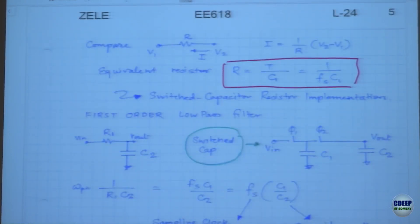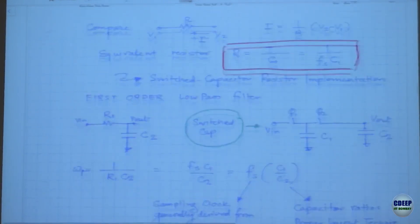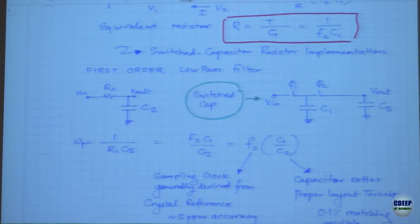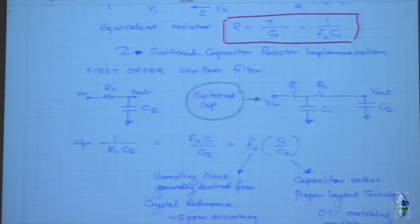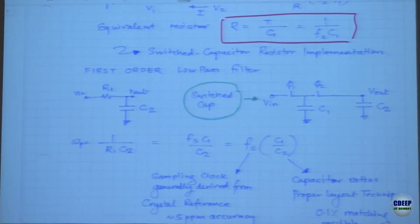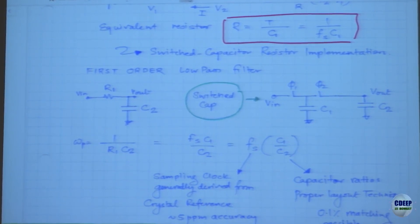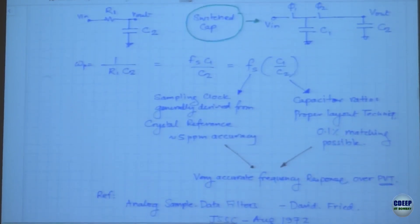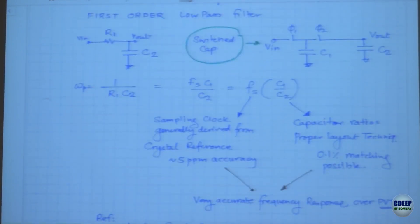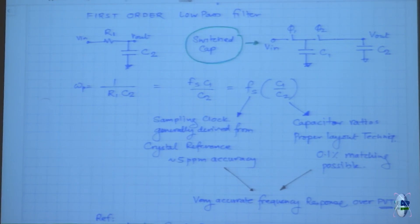You can create a simple first-order RC filter using switch caps. The corner frequency, which is 1 over R1·C2, is given by sampling frequency multiplied by the ratio C1/C2. The key point is Fs comes from an extremely accurate clock reference, and C1/C2 is a ratio of two capacitors accurate to 0.1% with good layout. So if you implement the filter using switch caps, the integrator corner frequencies are very accurate.